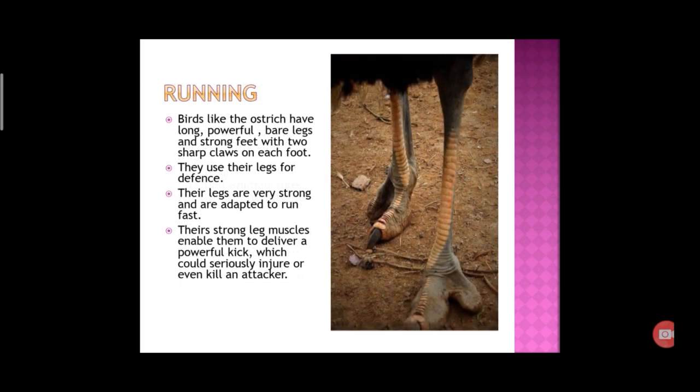Running. These birds have long, powerful bare legs and strong feet with two sharp claws on each foot. They use their legs to defend themselves and are adapted to run very fast, which can injure or even kill an attacker. For example, ostrich.